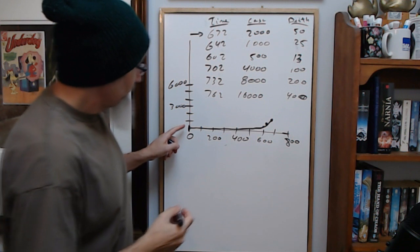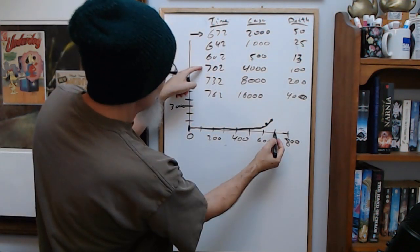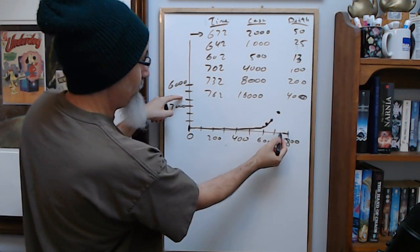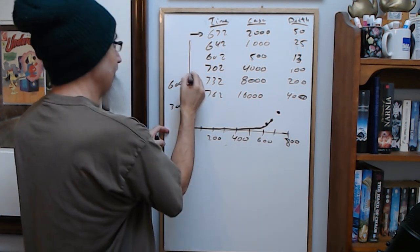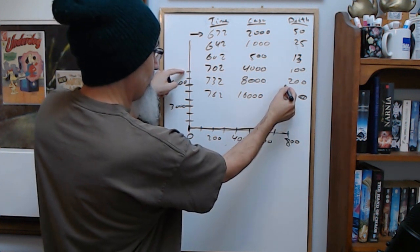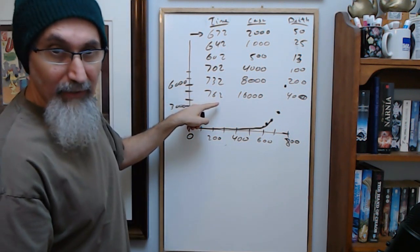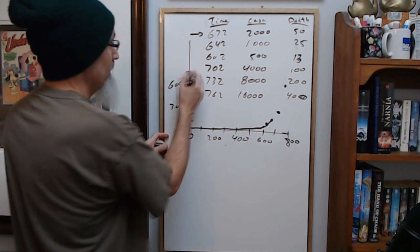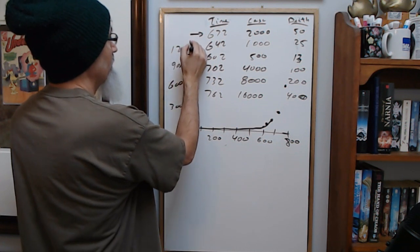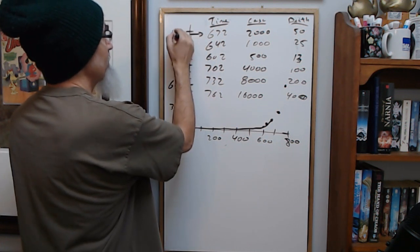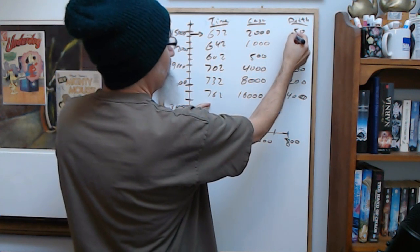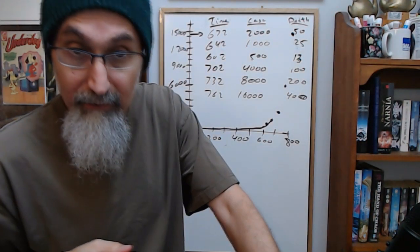Another 30 hours, 732 hours, 732, we're at 8000 cases and we have 200 deaths. 762 hours, we're at 16,000 cases, we're at 400 deaths. So let's graph this. At 702 we're at 4000. At 732 we're at 8000. So 732, we're at 8000. At 762 hours, we should be at 16,000. 8, 9,000, 10, 11, 12,000, 13, 14, 15,000, and 16,000. So here we're here.